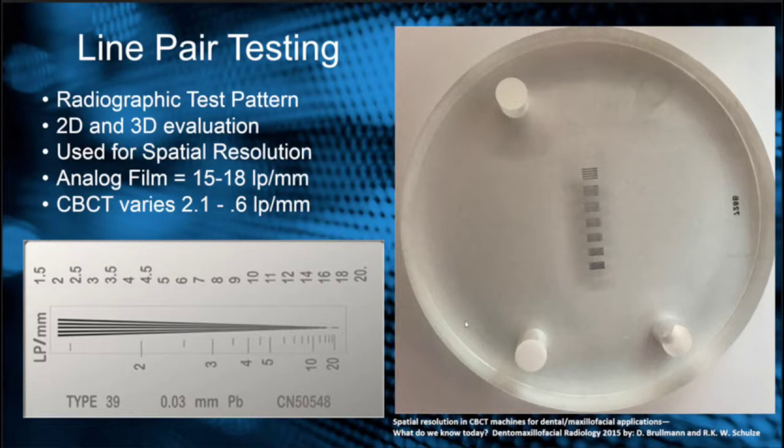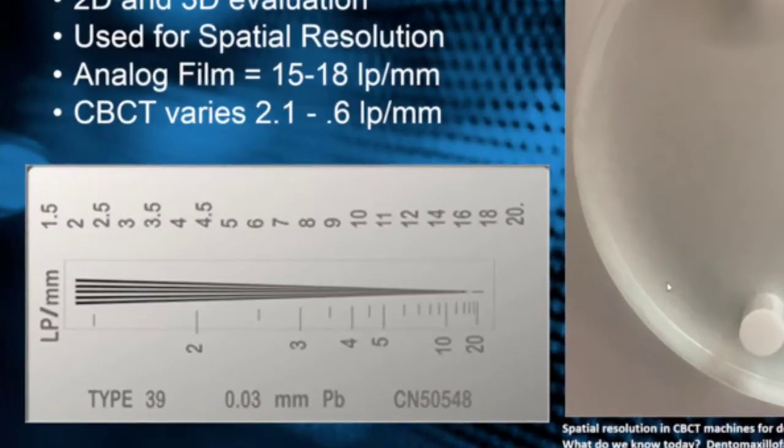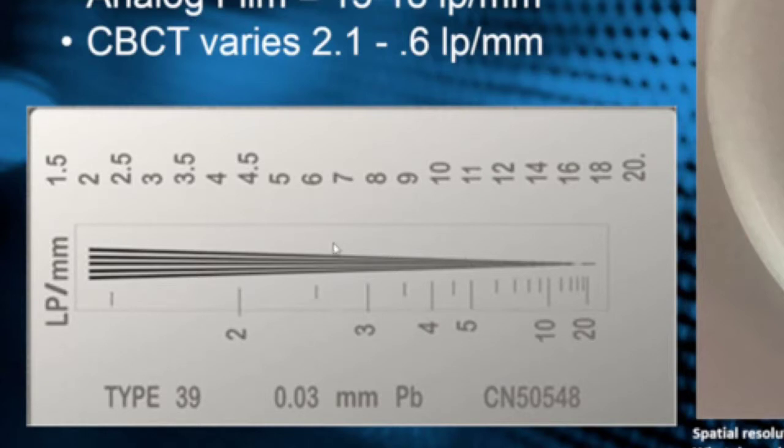A line pair test is really just a radiographic test pattern. There's two different types of line pair tests that I have examples for. This long, skinny one down here is used for 2D evaluation. Really, what a line pair test is used for is: how many lines can you separate within a given millimeter?